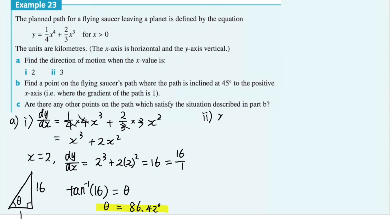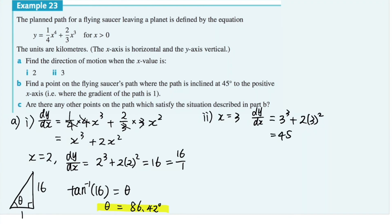In part 2, when x equals 3, the derivative function equals 3³ plus 2 times 3² equals 45. To find theta, we compute inverse tan of 45, which equals approximately 88.73 degrees. You can do this on your CAS.